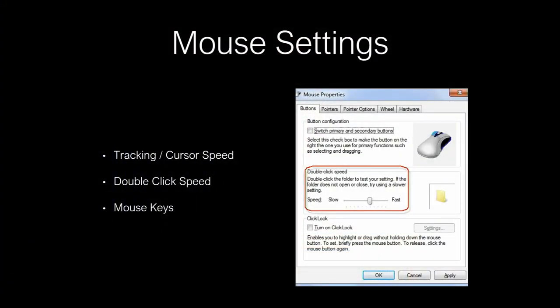We can also adjust double click speed. I tell this story about my father who said 'dumb computer, this click thing doesn't work.' I turned it down two notches, and he could go click-click more slowly and that counted as a double click. That's a really simple setting to change. On a Windows computer, go to Settings, go to Mouse, change the double click speed or change the tracking speed.